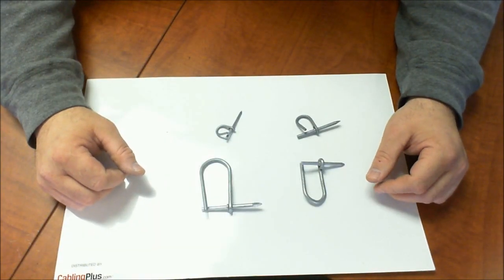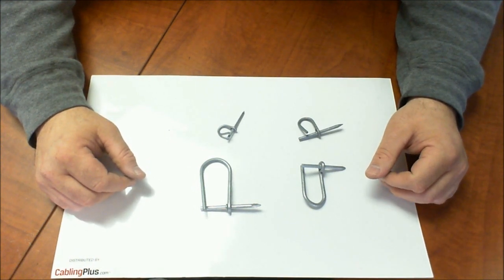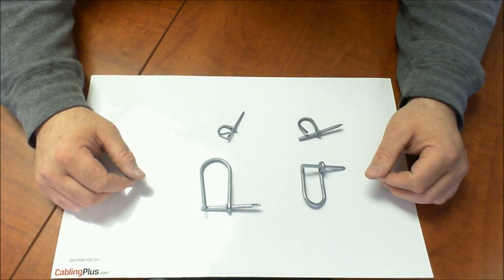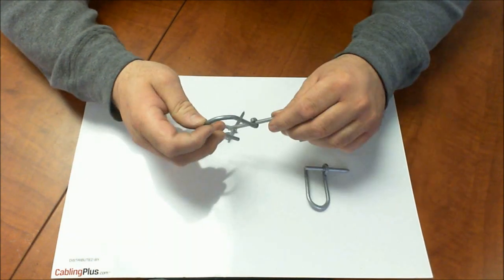Hey everybody, thanks for joining me. This is Eric over at cablingplus.com and today I want to show you the Arlington Industries nail-in dry rings. These are called dry rings because they're meant to just be nailed right into a wood surface.